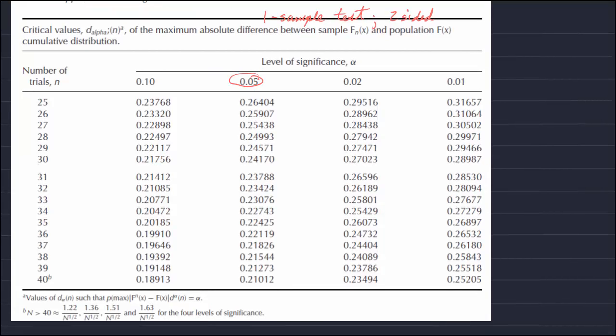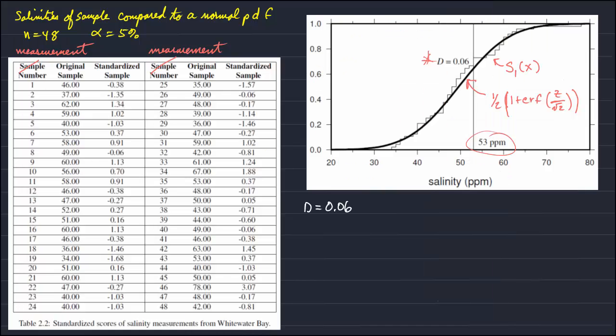And so, we have to multiply, well, we take 1.36 divided by the square root of 48. And when we do that, we get 0.1963. So, the critical D value for D 48 at 0.05 is equal to 1.36 divided by the square root of 48. And that's equal to 0.1963. And our D value happens to be less than 0.1963.